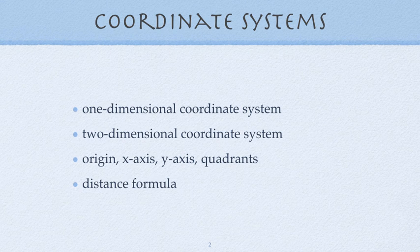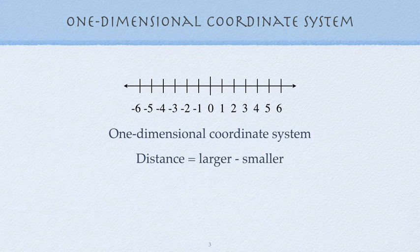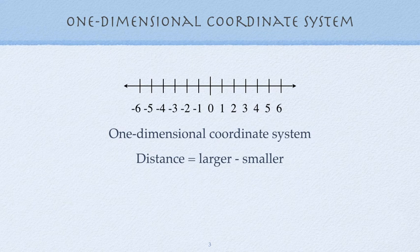Here's an example of a one-dimensional coordinate system. You probably know it well as a number line. In order to find distance on this coordinate system, you start with a larger coordinate like 4 and take away a smaller coordinate like negative 3.